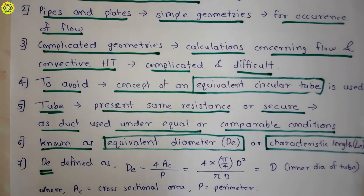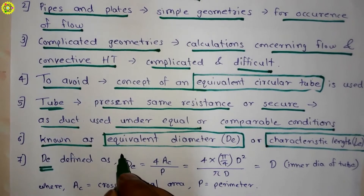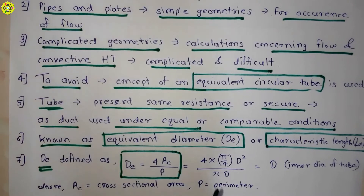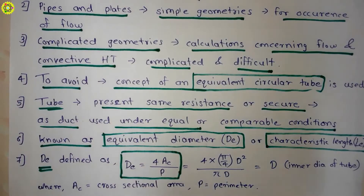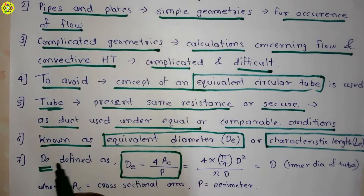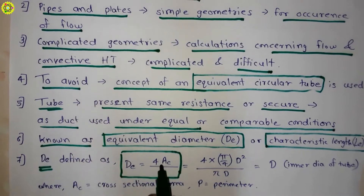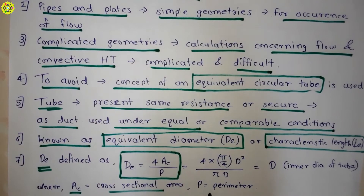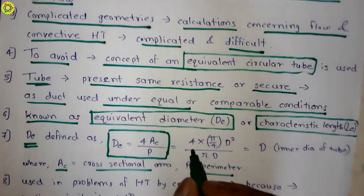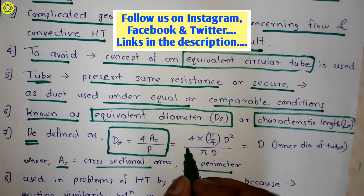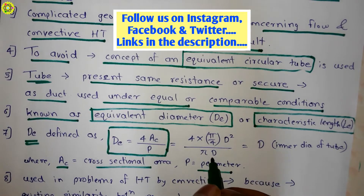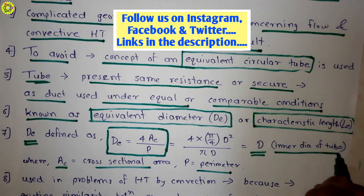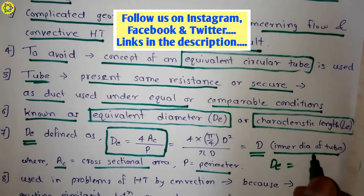This equivalent diameter de is defined by a common formula: de = 4Ac / P, where Ac is the cross-sectional area and P is the perimeter. For a circular tube, this simplifies to 4 × (π/4 × d²) / (π × d), which equals d — the inner diameter of the tube. So de = d.